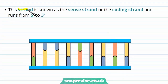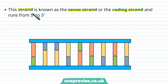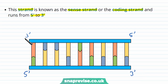The strand we're talking about — the one we want — is called the sense strand. We also call it the coding strand, because it codes for the protein we want. It has to run from 5' to 3'. Remember, DNA is antiparallel: while one strand runs from 3' to 5', the other runs 5' to 3'. Whichever gene we're taking, whichever side it's on, it has to be read from 5' to 3'. Every gene is read in the 5' to 3' direction.